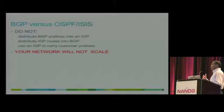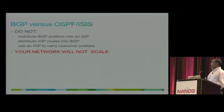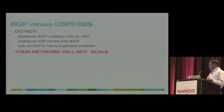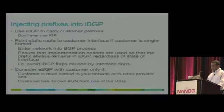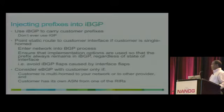How do we inject routes into BGP? Not by distributing IGP into BGP. You have to inject specific prefixes using network statements and static routes, instead of just distributing routes. Use IBGP to carry customer prefixes — essentially the customer prefixes of that ISP.